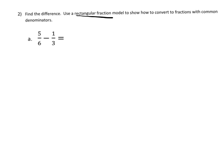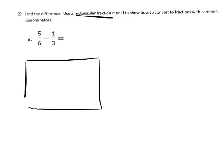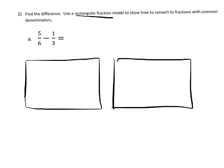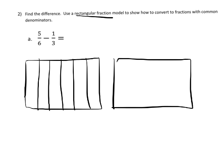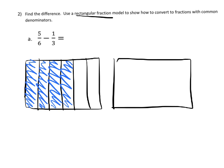We're going to start with two identical rectangles. We're going to cut this first one into sixths — cut it in half and then each piece into thirds. Now I'm going to shade in five sixths: one, two, three, four, five. There's our five sixths.